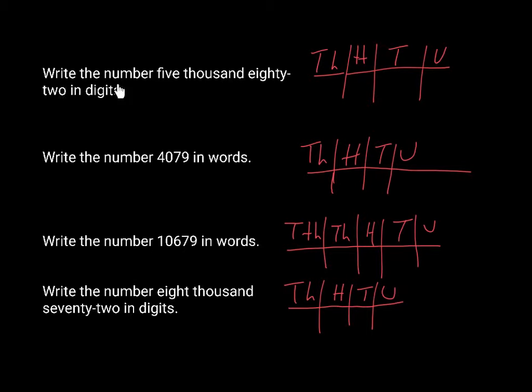In the first question says write the number 5082 in digits. What I would suggest you do is have a place value grid on your paper right beside the question and just very carefully read what digits are going to be in which column.